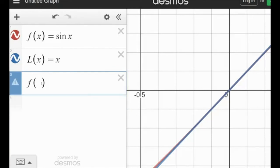But anything that's around 0, like say I did negative 0.1, it's pretty darn close to negative 0.1.